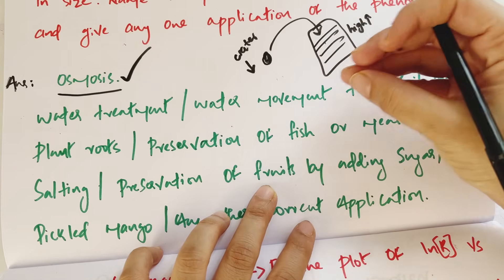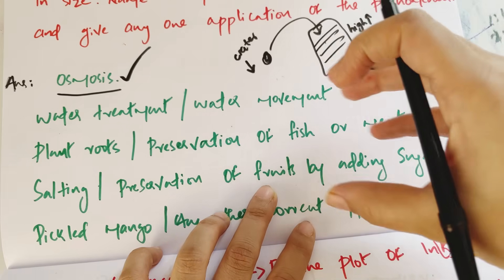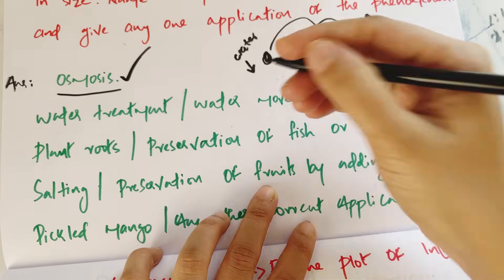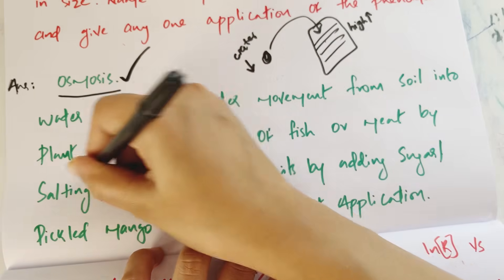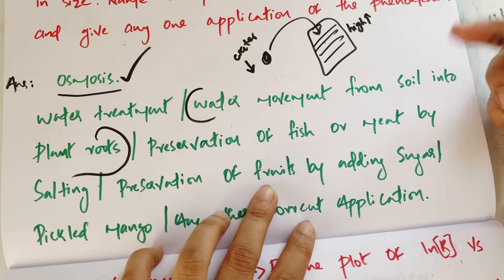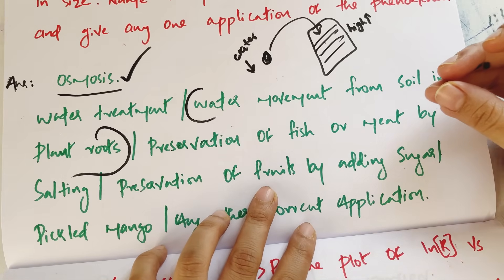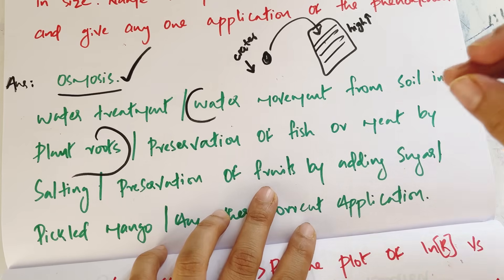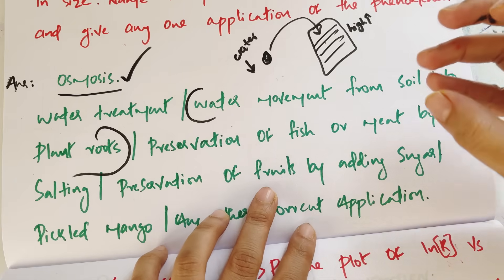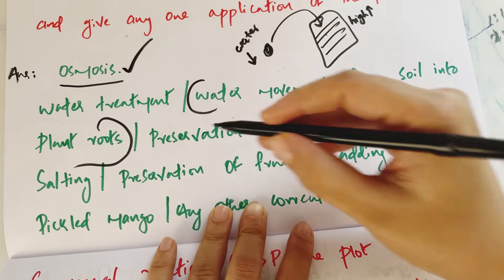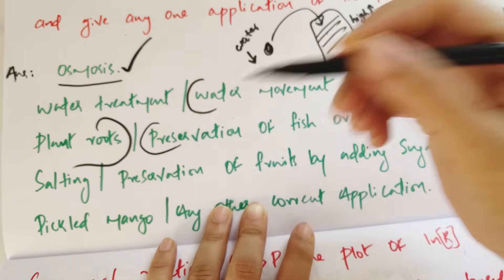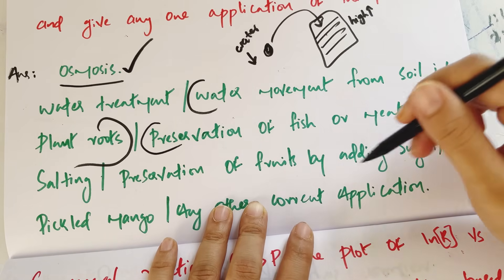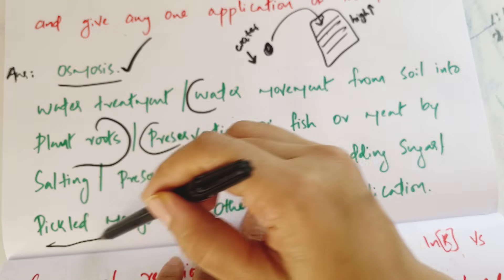One application of osmosis is the water movement from soil into plant roots. Another application is the preservation of fruits by adding sugar — for example, pickled mango.